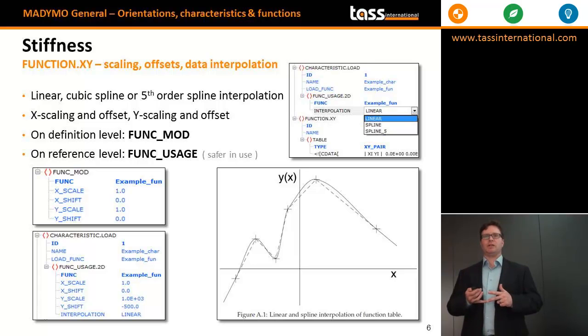Furthermore, functions can be changed by specifying a scaling in both x and y direction, and a shift in x and y direction. These changes can be specified through two keywords. One is funcmod, which is a modification of a function on a global level and permanently modifies your function for the entire analysis.